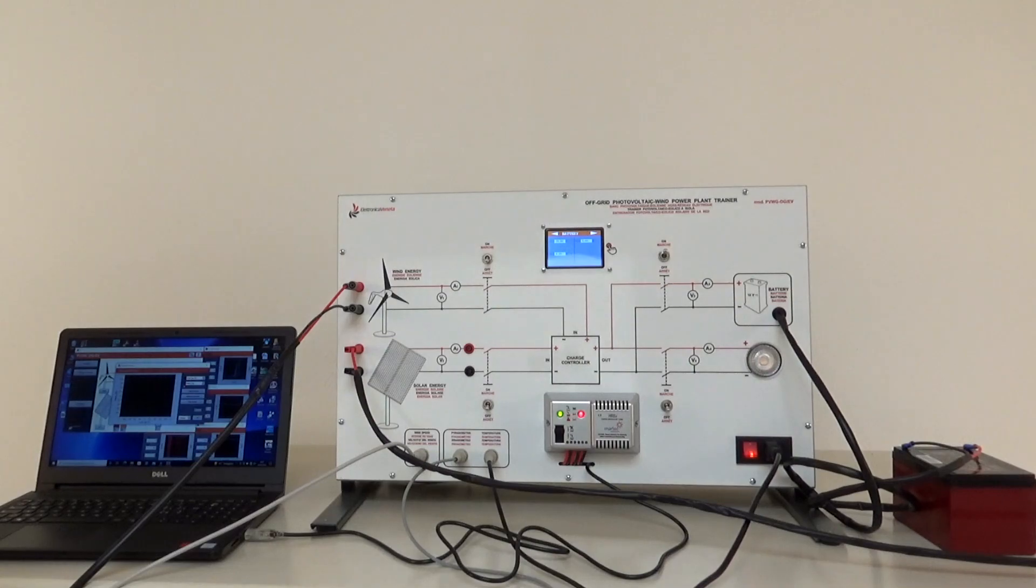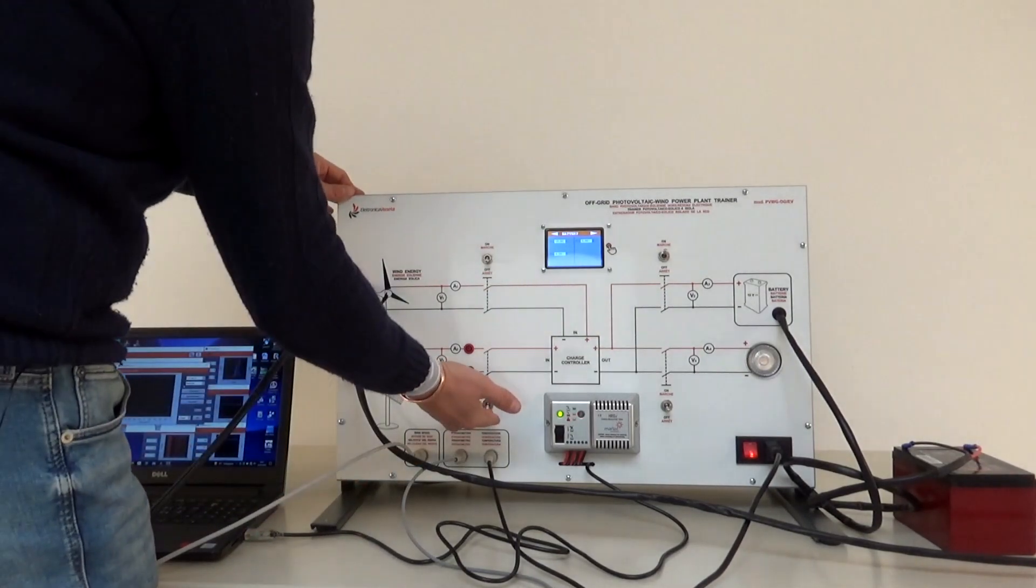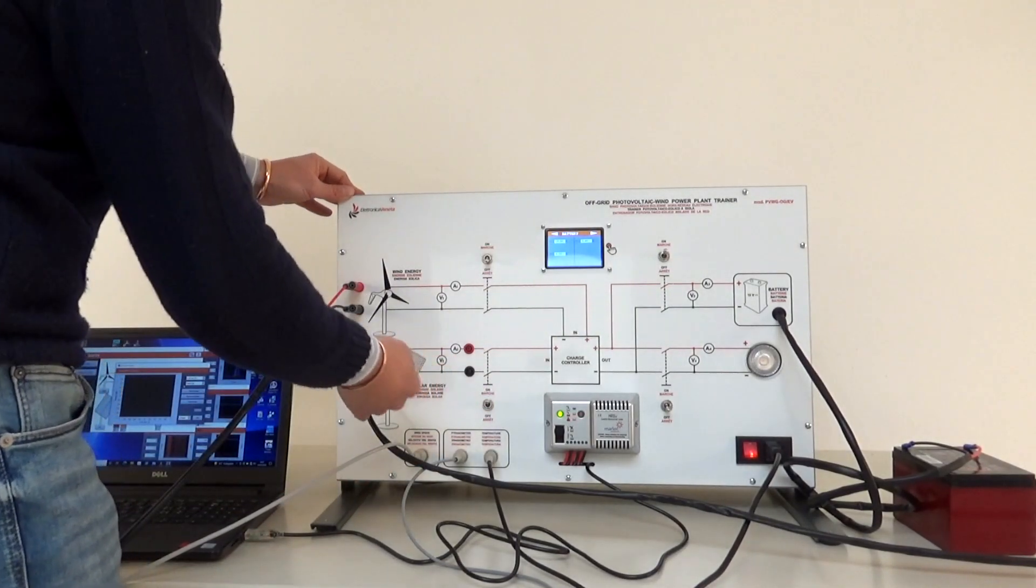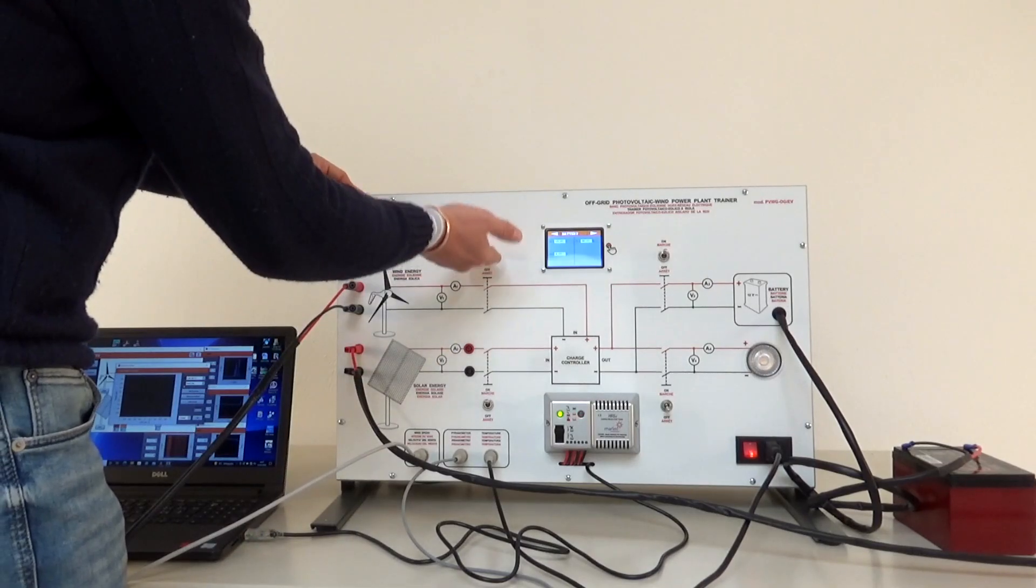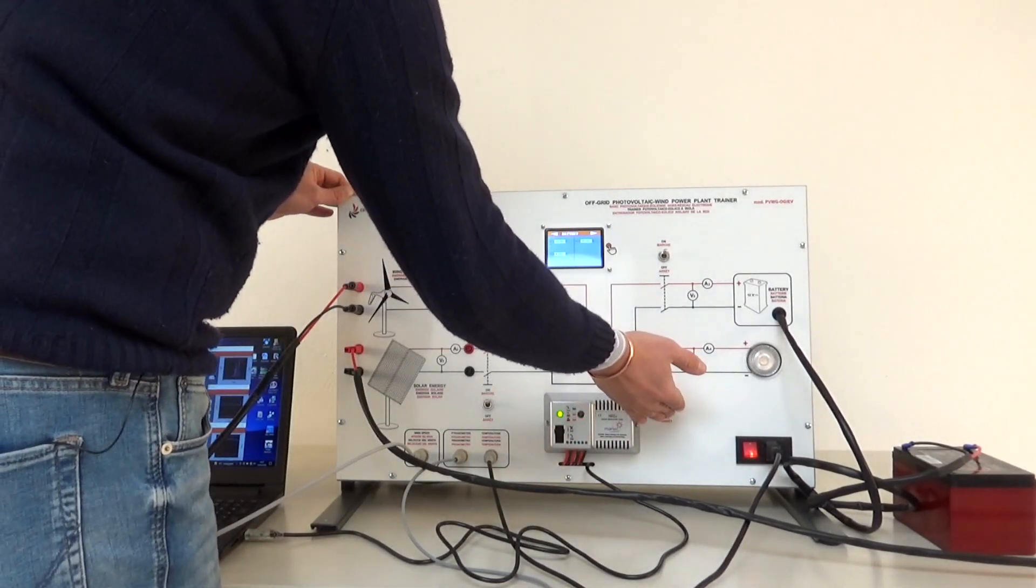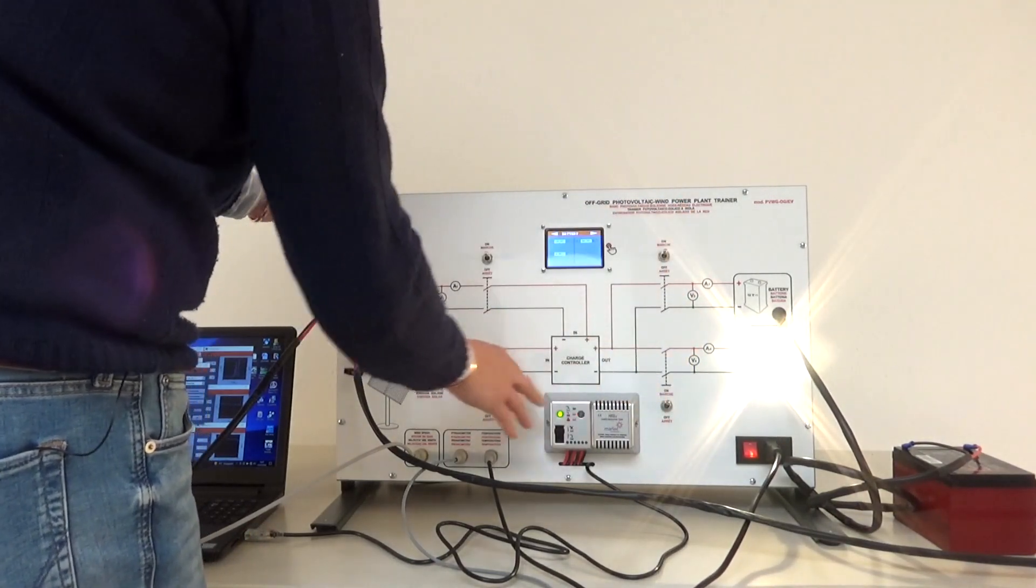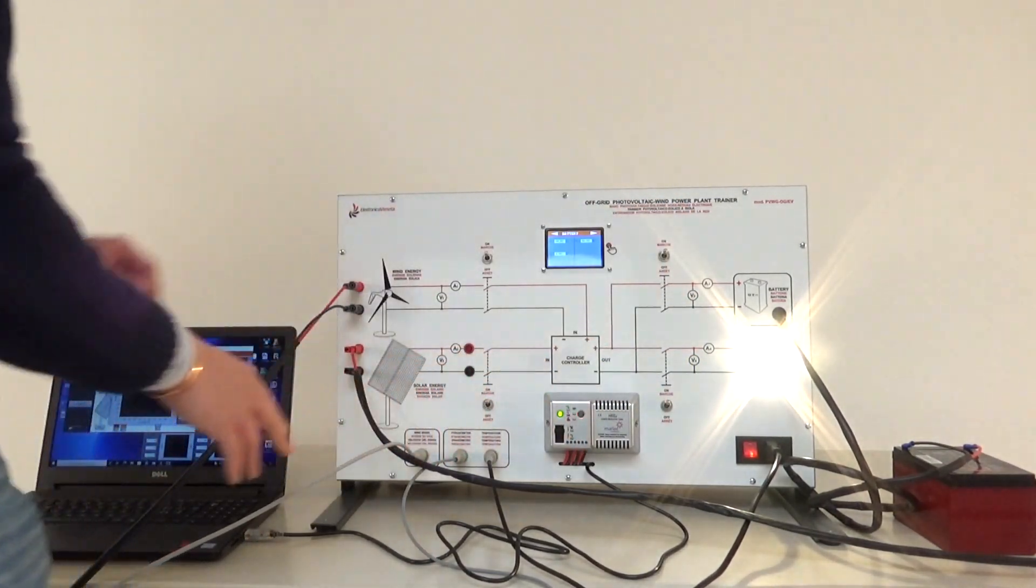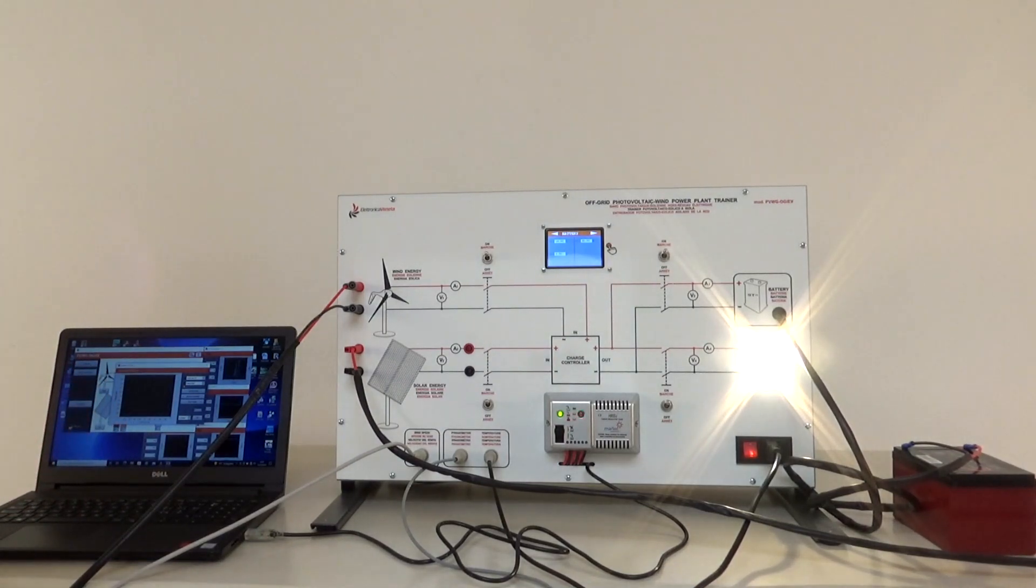So let's perform a last example in which everything is connected and we can see the direction of energy in the circuit. I turn on my photovoltaic panel, I turn on the wind energy, I insert the load and the battery. Everything is connected and goes to the charge controller. Then I turn on the fan.